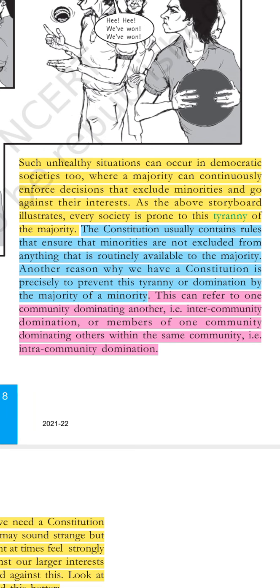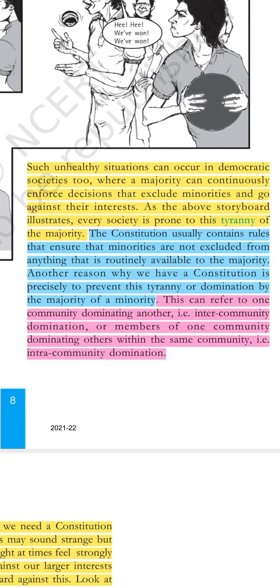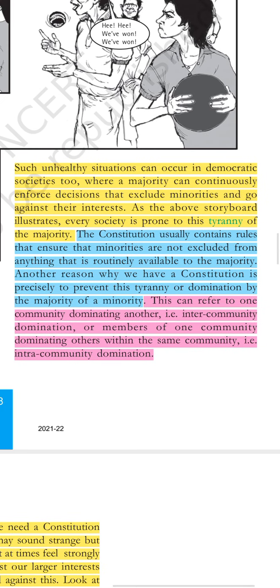As the above storyboard illustrates, every section of society is prone to this tyranny of the majority. The constitution usually contains rules that ensure minorities are not excluded from anything that is routinely available to the majority. Another reason why we have a constitution is precisely to prevent this tyranny or domination by the majority over the minority. This can refer to inter-community domination — one community dominating another — or intra-community domination — a member of one community dominating within the same community.